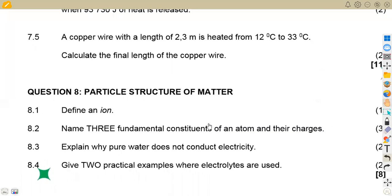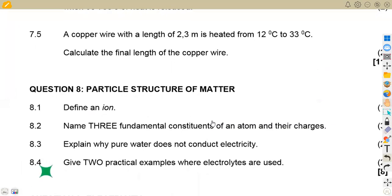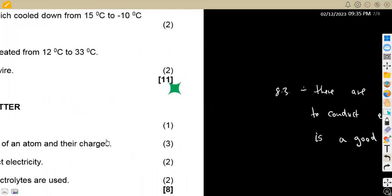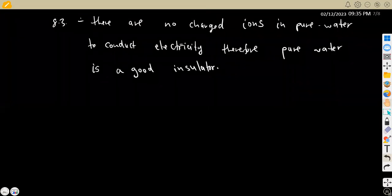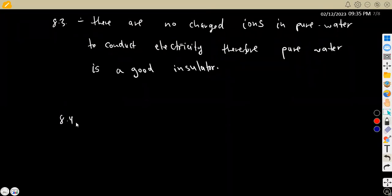8.4, give two practical examples where electrolytes are used. Two practical examples where electrolytes are used. So where can we apply or where can we have the electrolytes? So that's 8.4. So remember, we can use this in batteries, which is cells. There are so many we can use in electroplating.